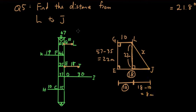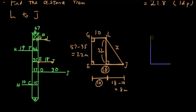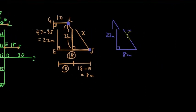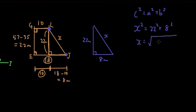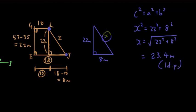Isolating that triangle, we have 8 meters on one side and 22 meters on another. Using Pythagoras: x squared equals 22 squared plus 8 squared, so x equals the square root of that. Putting it into the calculator gives 23.4 meters rounded to one decimal place — that is the length from L to J.